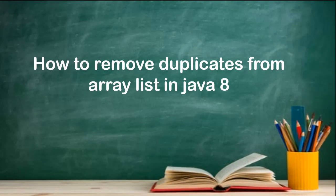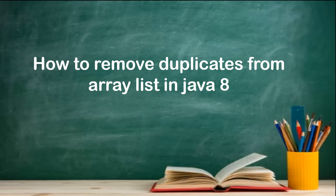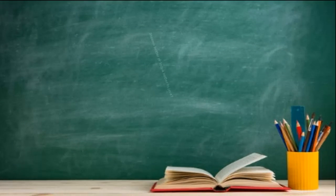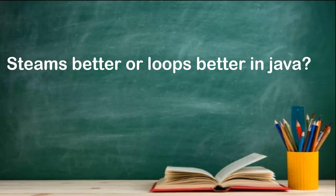The next question: how to remove duplicates from an ArrayList in Java 8? That's straightforward — we can use the distinct() method. We can call arraylist.stream() and use distinct directly. The next question: are streams better or loops better in Java? It's up to you, but personally I feel streams are better than loops.